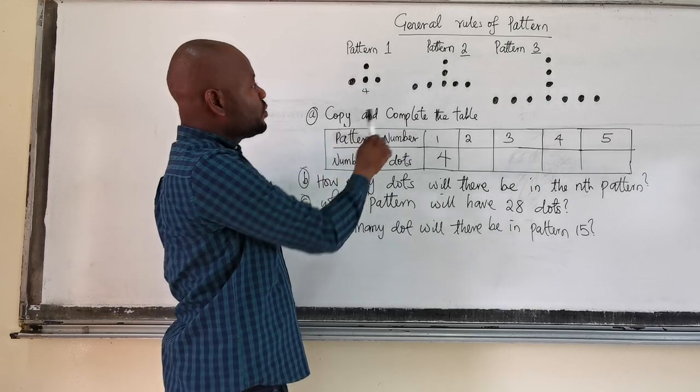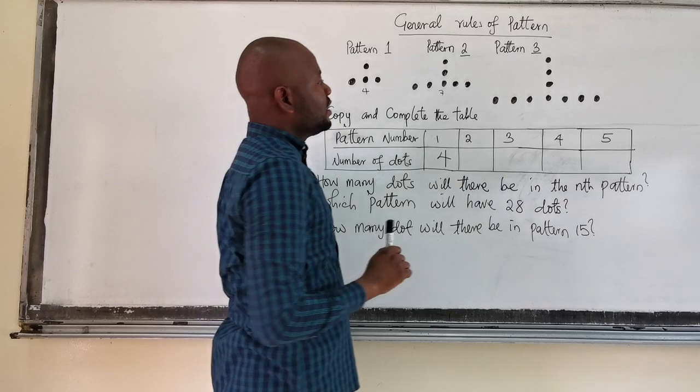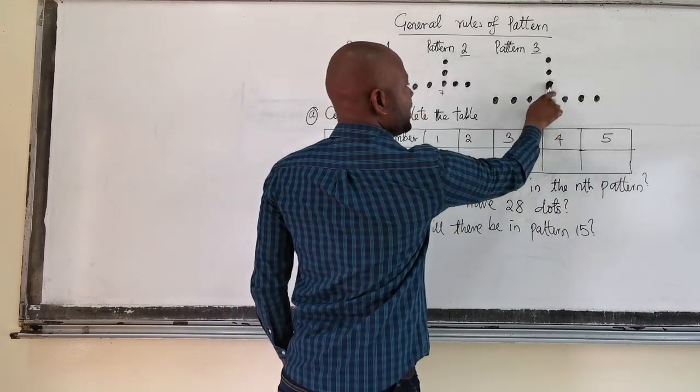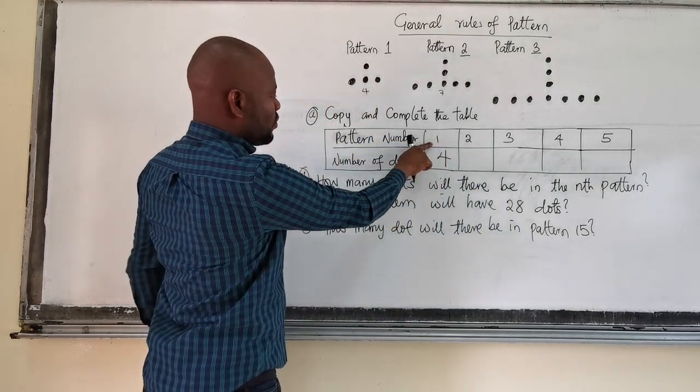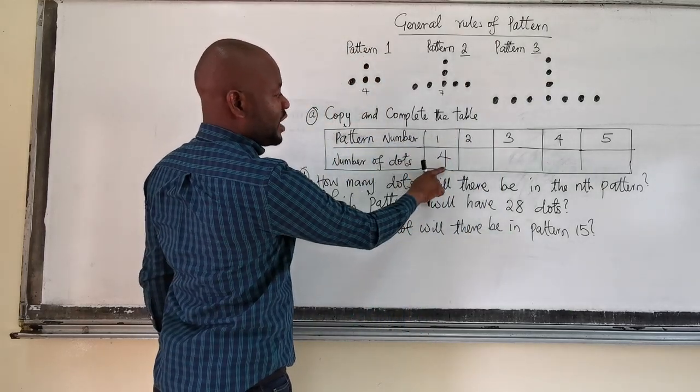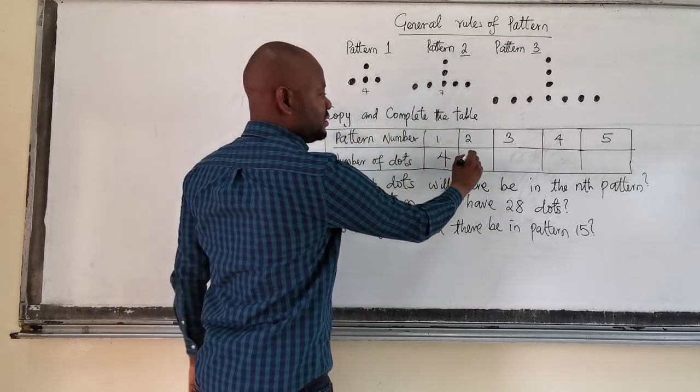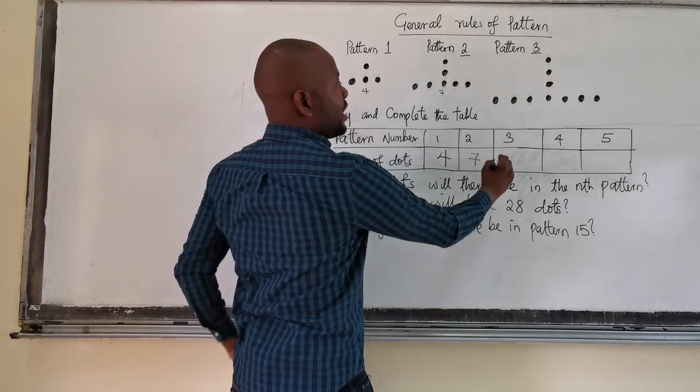And this one also, we have 1, 2, 3, 4, 5, 6, 7. We have 7 dots here. Here also we have 1, 2, 3, 4, 5, 6, 7, 8, 9, 10. So that means that in the first pattern, number 1, we have 4, already given. Then number 2, we have 7. Pattern 3, we have 10.